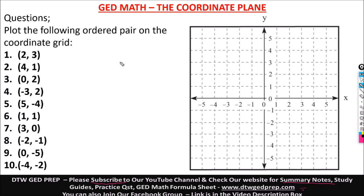Now let's get on to this question. It says plot the following ordered pair on the coordinates grid. When you see a pair like this, 2 is on the x-axis, y 3 is on the y-axis. In maths, when you have a coordinate plane, the x-axis is this horizontal line, while the vertical line is the y-axis. Sometimes in your graph they won't label the y or label the x, so it's up to you to know that the horizontal way is your x, while the vertical way is your y. This is called an ordered pair — it's like to find a point on a graph or location.